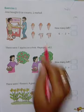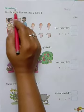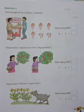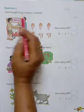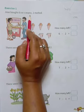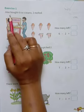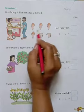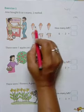Now let us solve exercise 1. I request you all to open page number 39 from your mathematics textbook. Let us read it. Joe bought 6 ice creams. How many ice creams are brought by Joe? 6.